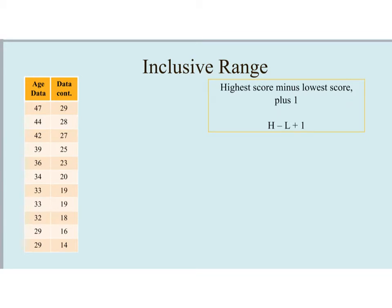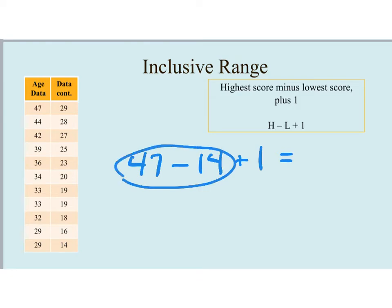Now let's review the second measure of variability called the inclusive range, which is more rarely used. It's similar to the exclusive range in that we find the highest score and subtract the lowest, but we add an extra step: we add 1. Using the age data, the highest score is 47, the lowest is 14, and we add 1. Order of operations says left to right: 47 minus 14 gives 33, then adding 1 gives an inclusive range of 34.